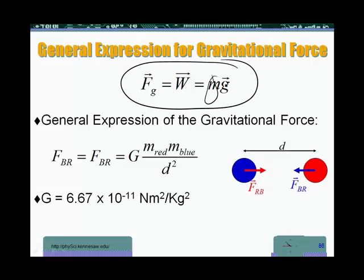g depends on the planet, and m depends on the object, how much mass it has. Now, that's the gravitational force at the surface of a planet.